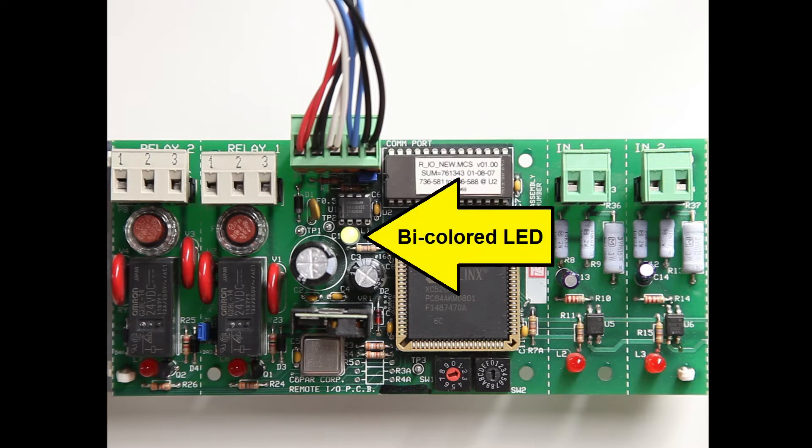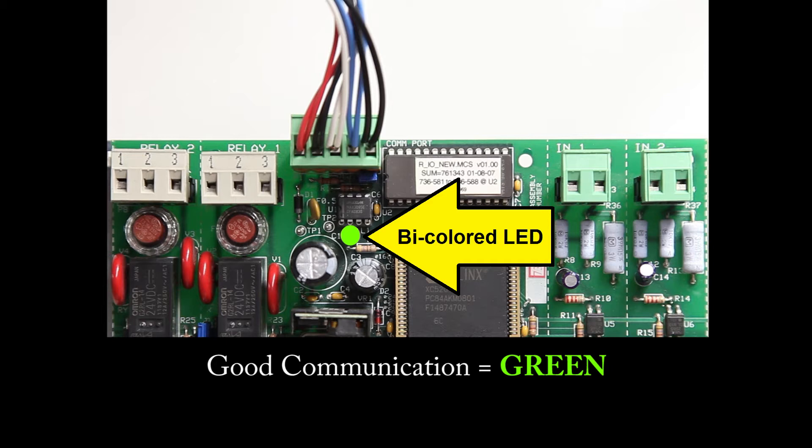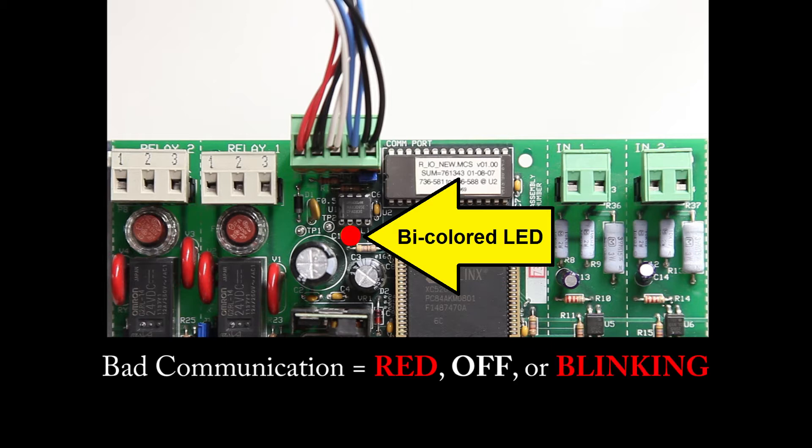This is a bi-colored LED, which indicates the status of the card's communication. Normally, the LED should be green, which indicates communication to the card is good. If the LED is red, off, or blinking, there is a communication problem. In this case, it is possible the jumper is in the wrong position.